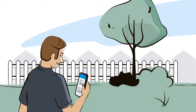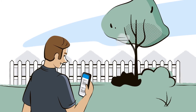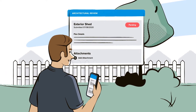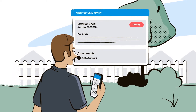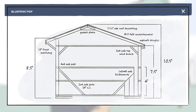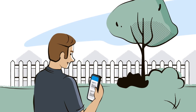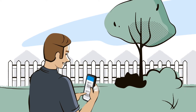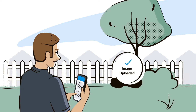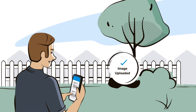And AppFolio doesn't just benefit managers. Homeowners can use the convenient mobile app to submit common area maintenance or architectural requests without the need to visit the office or even make a call. They can simply upload the specs of their project with a description and it will be submitted to the board or architectural committee for review.